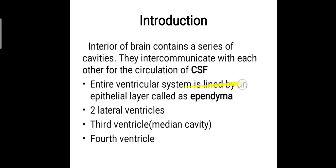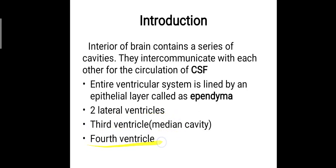The entire ventricular system is lined by an epithelial layer called as the ependyma. The ventricular system is composed of two lateral ventricles, the third ventricle which is the median cavity, and the fourth ventricle. So these are the ventricles which are present in the system.